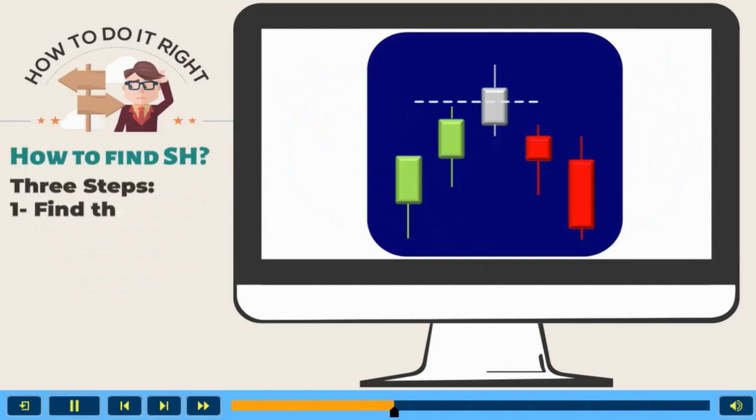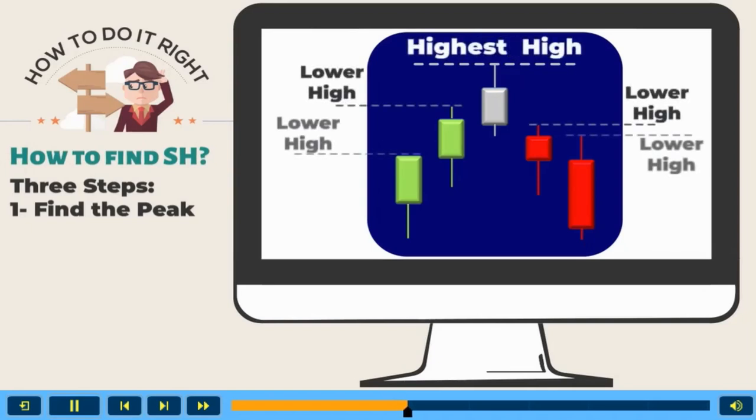Step 1, find the peak candle. The peak candle is the one that has the highest high amongst all other candles. Then mark the peak candle as zero.